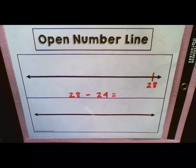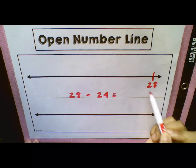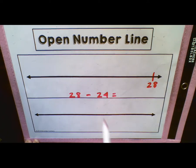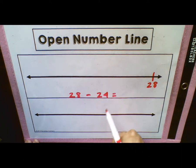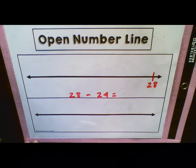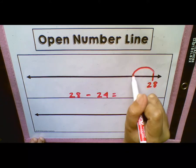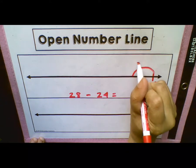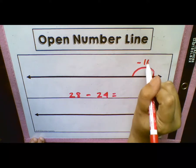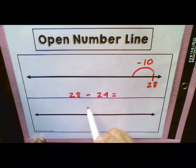Here's where the place value comes in. On the number 28, we know we have two tens and eight ones. And the number 24 has two tens and four ones. So they want us to go backwards two tens and four ones. We are going to do exactly that — we're going to go back one ten first. What I like to do up here is have students write that we are going back, so we know we are subtracting. So we're going to do minus ten.